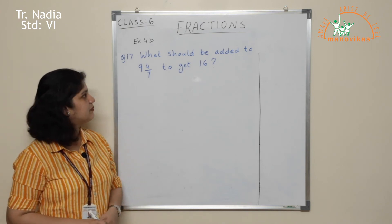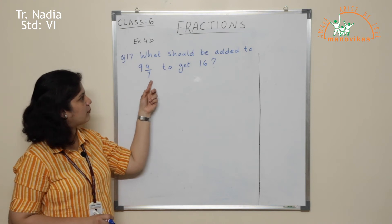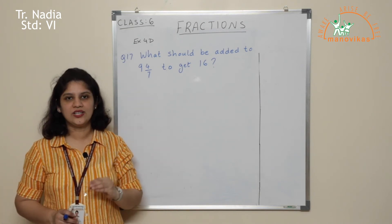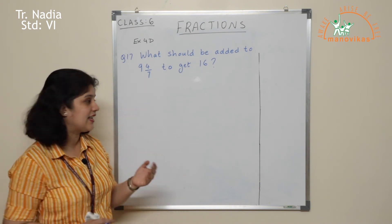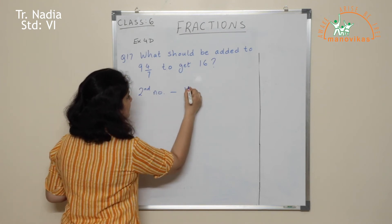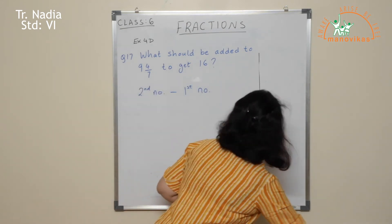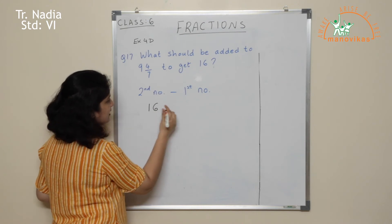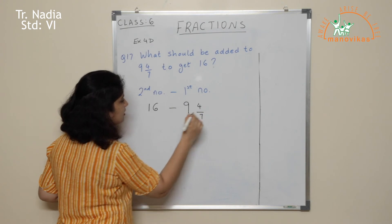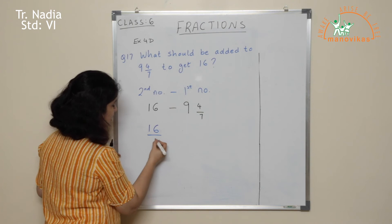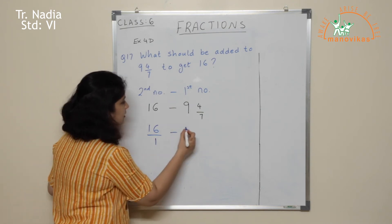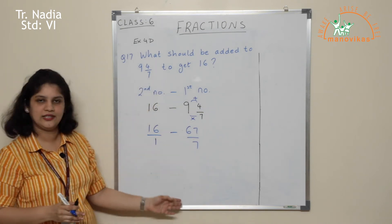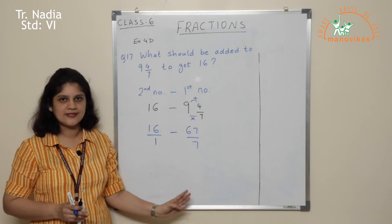Question 17: what should be added to 9 and 4 upon 7 to get 16? When the words are 'what should be added,' it is always the second number minus the first number. Here the second number is 16 and the first number is 9 and 4 upon 7. So write it as 16 minus 9 and 4 upon 7. In the next step, make 16 a fraction by putting 1 in its denominator, and convert the mixed number: 7 × 9 + 4 = 67 upon 7. Then find the LCM, make them like, and subtract to get your answer.